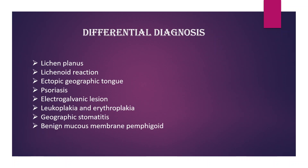Differential diagnosis. Lichen planus: homogenous picture, no dark erythema, no telangiectasia; mucosal changes are usually extensive and symmetrical. Lichenoid reaction: history of drug use is always present. Ectopic geographic tongue: systemic manifestations present in lupus erythematosus are absent in ectopic geographic tongue. Psoriasis: Auspitz sign is positive. Electrogalvanic lesion: dissimilar restorations seen in the oral cavity. Leukoplakia and erythroplakia: lesions tend to maintain the same appearance with no signs of skin changes. Geographic stomatitis: no skin changes; mucosal lesions change location rapidly. Benign mucous membrane pemphigoid: no systemic complaints; serology test to be done.